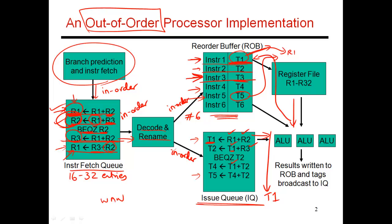In the next cycle, the second instruction has both of its operands available, so it leaves in the next cycle. It reads R3 from the register file and T1 from the reorder buffer, does the math, produces a result, and writes it into reorder buffer entry T2. It then sends a broadcast to the issue queue saying T2 is now available, so everyone waiting for T2 becomes ready. Until now, our processor was not behaving very differently from an in-order processor — we issued instruction 1 first, and then sometime later when the value was produced, we issued instruction 2.